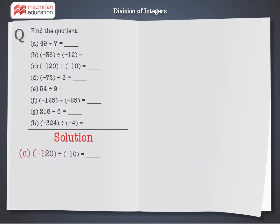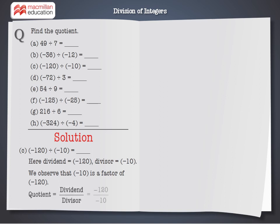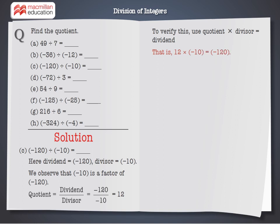C: minus 120 divided by minus 10. Here, dividend is equal to minus 120, divisor is equal to minus 10. We observe that minus 10 is a factor of minus 120. Quotient equals dividend divided by divisor, which is equal to 12. To verify: quotient multiplied by divisor equals dividend — 12 multiplied by minus 10 is equal to minus 120. Therefore, quotient is equal to 12.